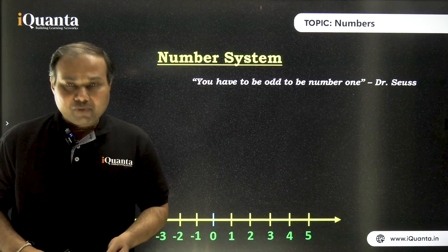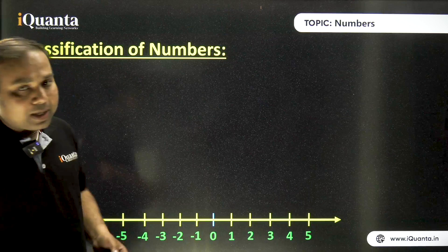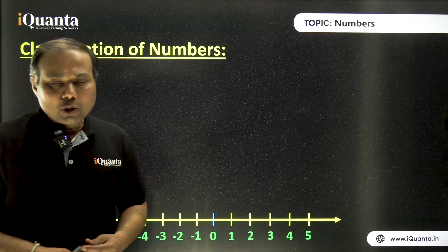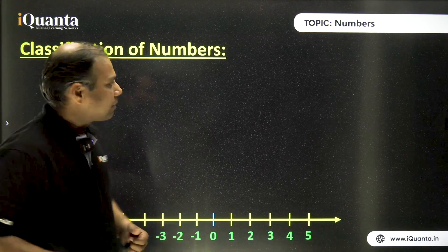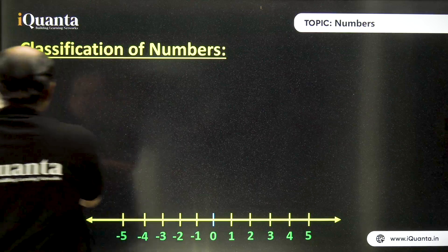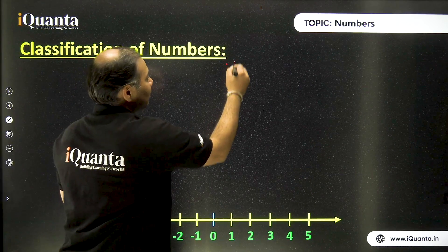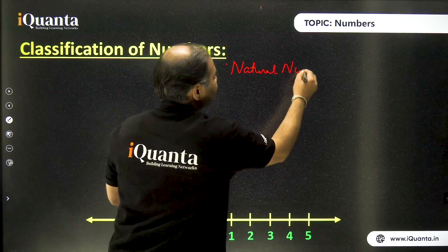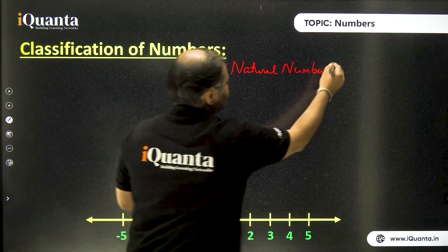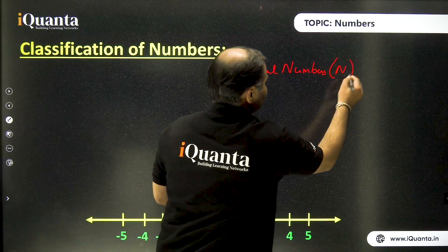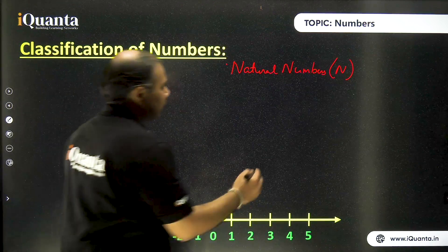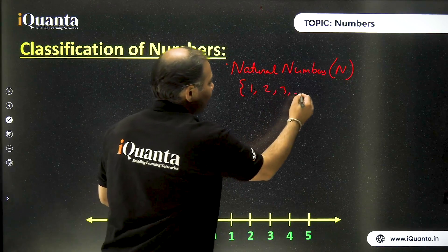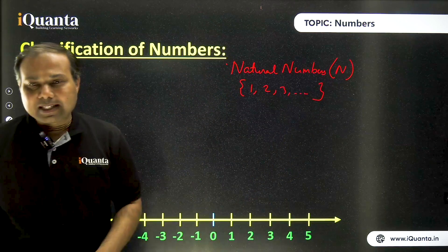So we are beginning with the first topic, that is simply classification of numbers. So in our schools, we have studied various types of numbers. So quickly, we are going to have a recap of all those things. The first variety of numbers is natural numbers. Natural numbers, they are also known as positive integers. They are denoted by the capital letter N. And examples, we have one, two, three and so on. All these numbers are known as natural numbers. They are also called counting integers or counting numbers.